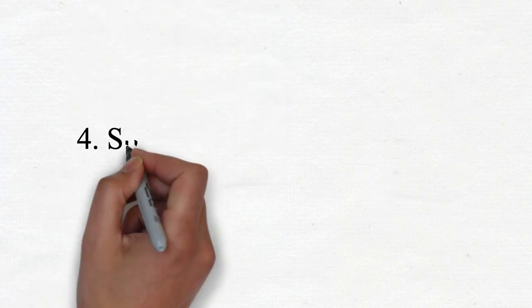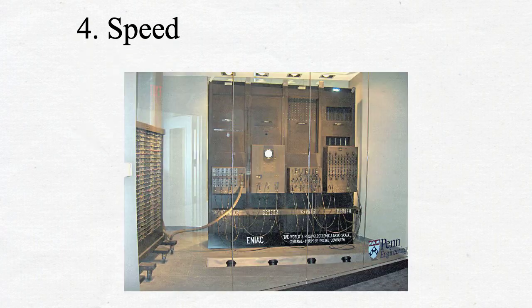Number 4 is Speed. ENIAC was much faster than earlier machines, capable of performing about 5,000 additions or 300 multiplications per second.